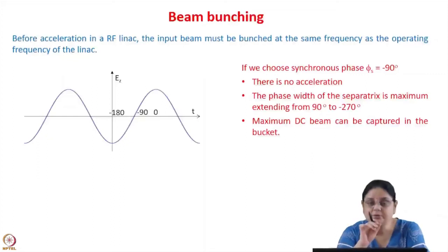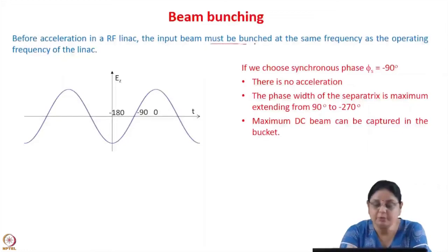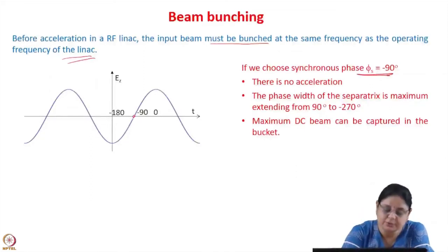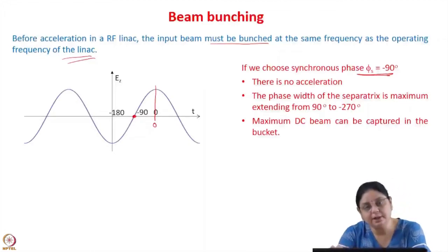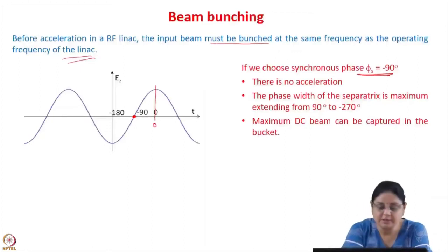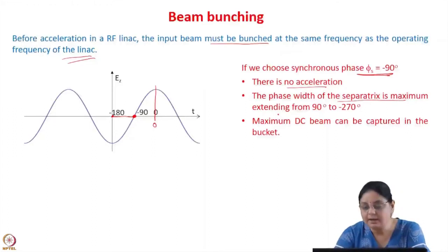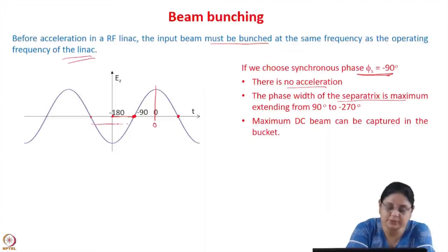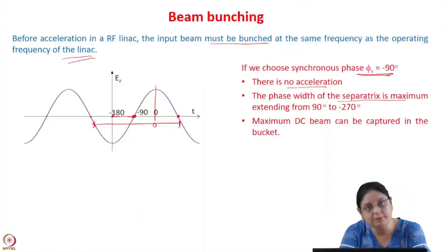Now let us see about beam bunching. Before acceleration in any RF linac, the input beam must be bunched at the same frequency as the applied operating frequency of the linac. For bunching, the synchronous phase is chosen to be -90°. At phi_s = -90°, there is no acceleration because the accelerating field there is 0, but the phase width of the separatrix is maximum — extending from +90° to -270°, covering the full 360°. This means when you inject a DC beam, the whole beam can be captured, so maximum DC beam can be captured in the bucket.